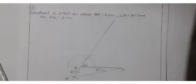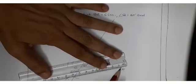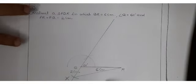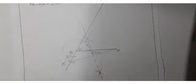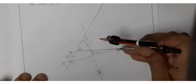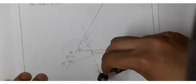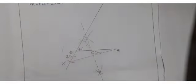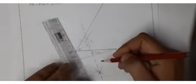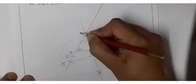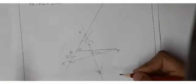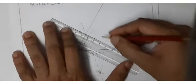Join X to R. After that, draw the perpendicular bisector of XR — cut one arc from R going up, and another arc from X going up and down, then join these two intersecting points with help of scale. The perpendicular bisector meets the 60 degree ray at point P.